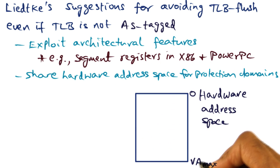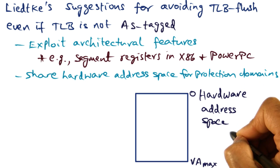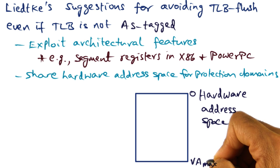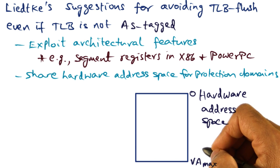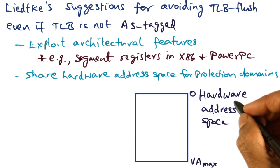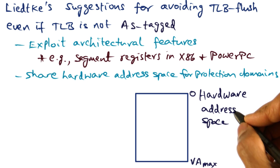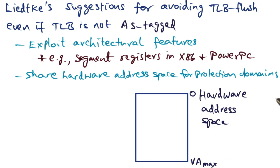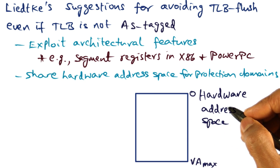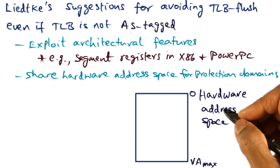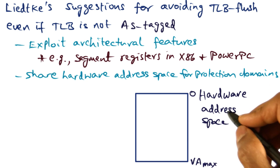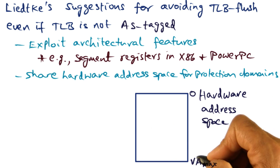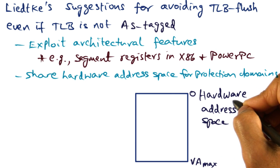Here is the linear address space provided by the hardware. It starts from 0 to a max, and that max is decided by the number of bits you have for addressing in the hardware architecture. If it's a 32-bit architecture, you have 2 to the 32 as the maximum address space available. So that's the linear address space provided by the hardware.